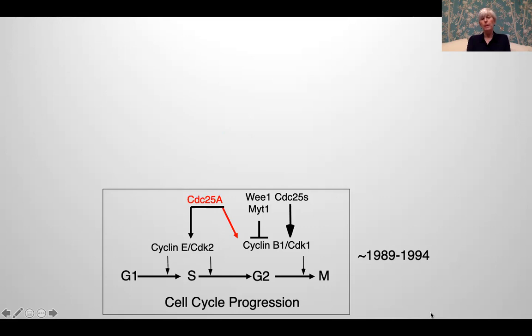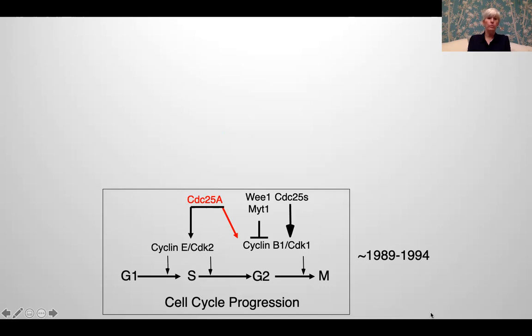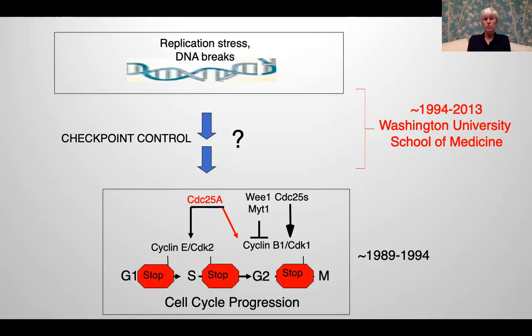There was an additional observation: CDC25A protein phosphatase was thought to only function at early cell cycle transitions, and we showed it had a more universal role, acting at both early and late cell cycle transitions. In 1994, I relocated my laboratory to Washington University School of Medicine, where we remained for almost 20 years. There we attacked another important unanswered question: how does stress — in the form of replication stress or DNA strand breaks, either single-strand or double-strand — signal to the cell cycle machinery to bring about cell cycle delays? This is what is known as cell cycle checkpoints.